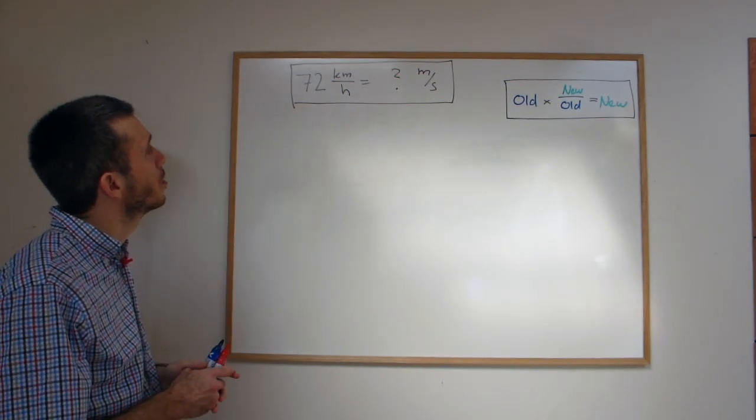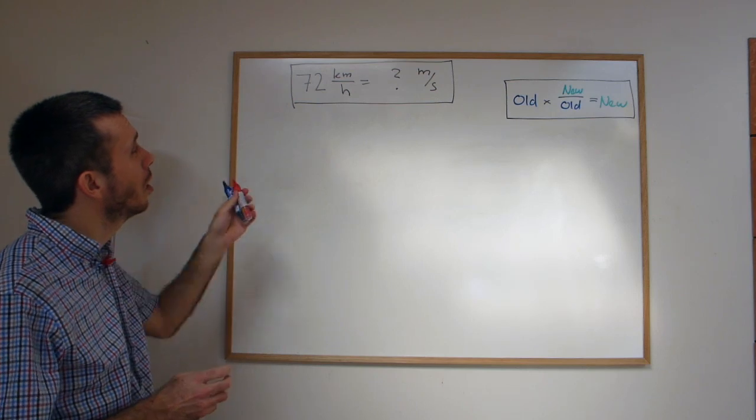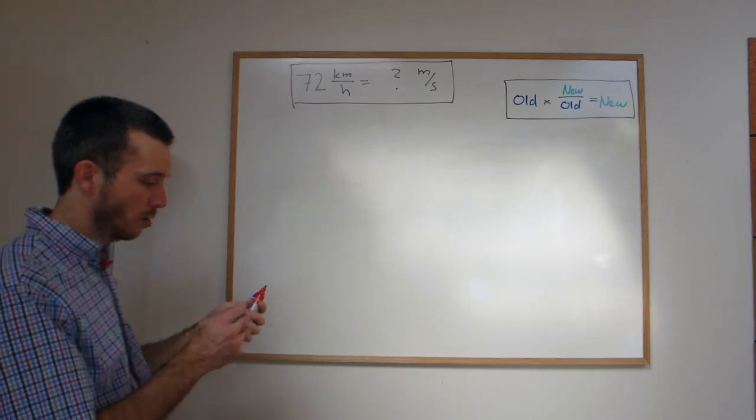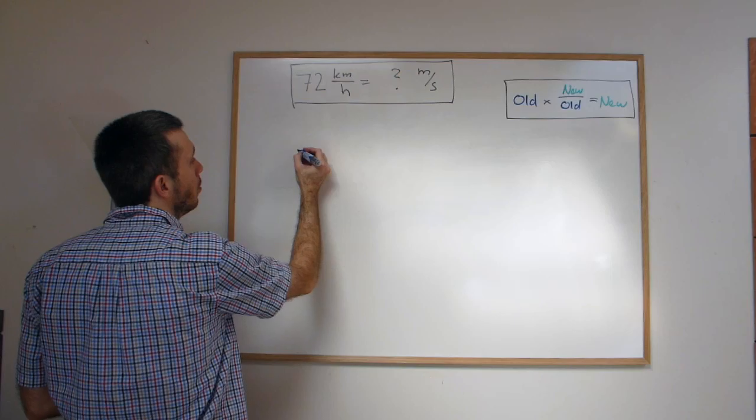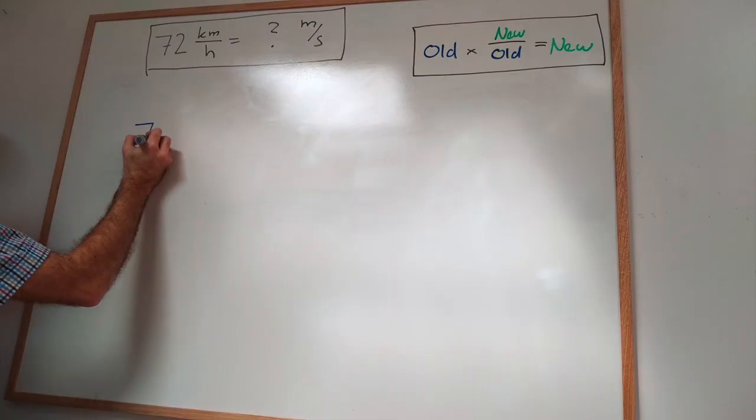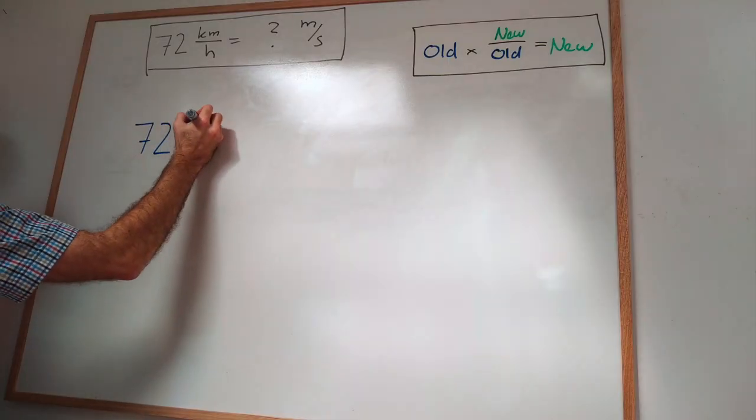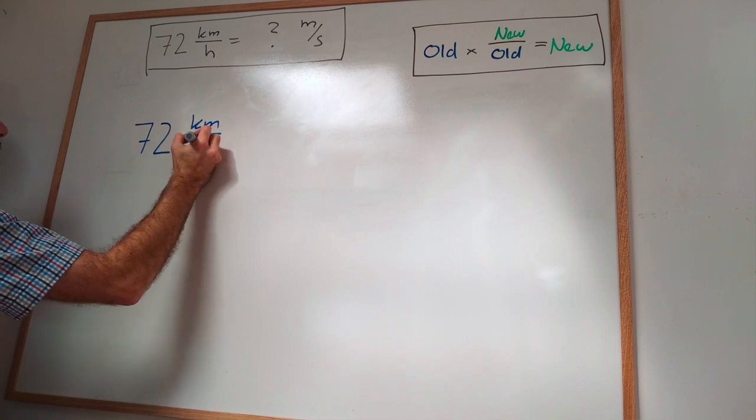The question is 72 kilometers an hour, how many meters per second is that? So I'm starting as I did in my last video by writing what I know. I know that we have 72 kilometers per hour.